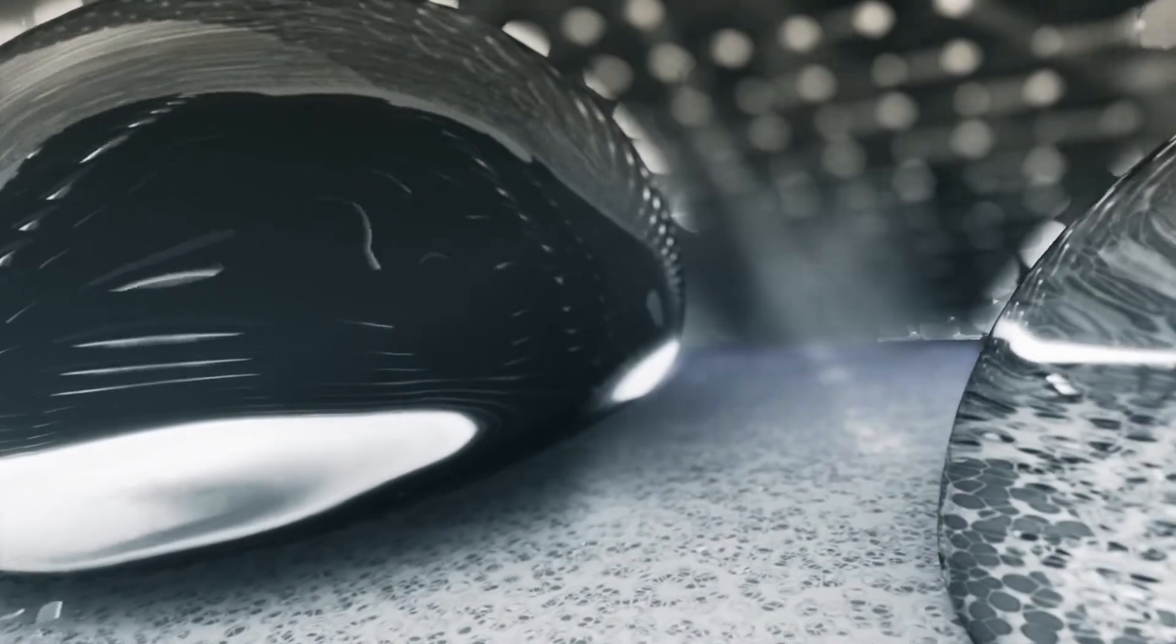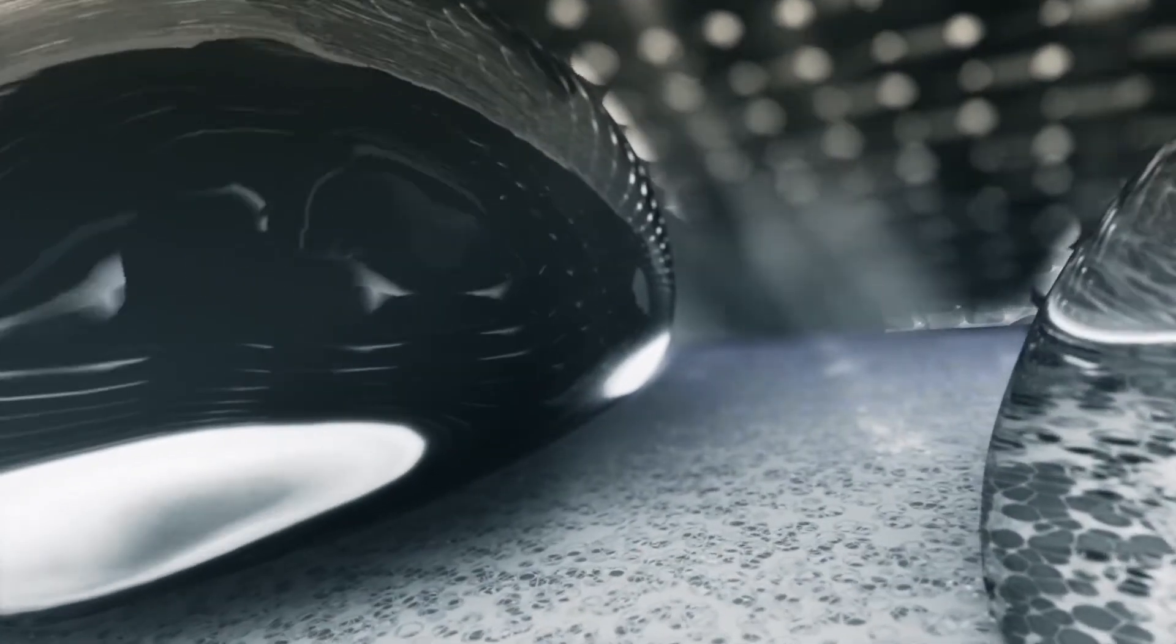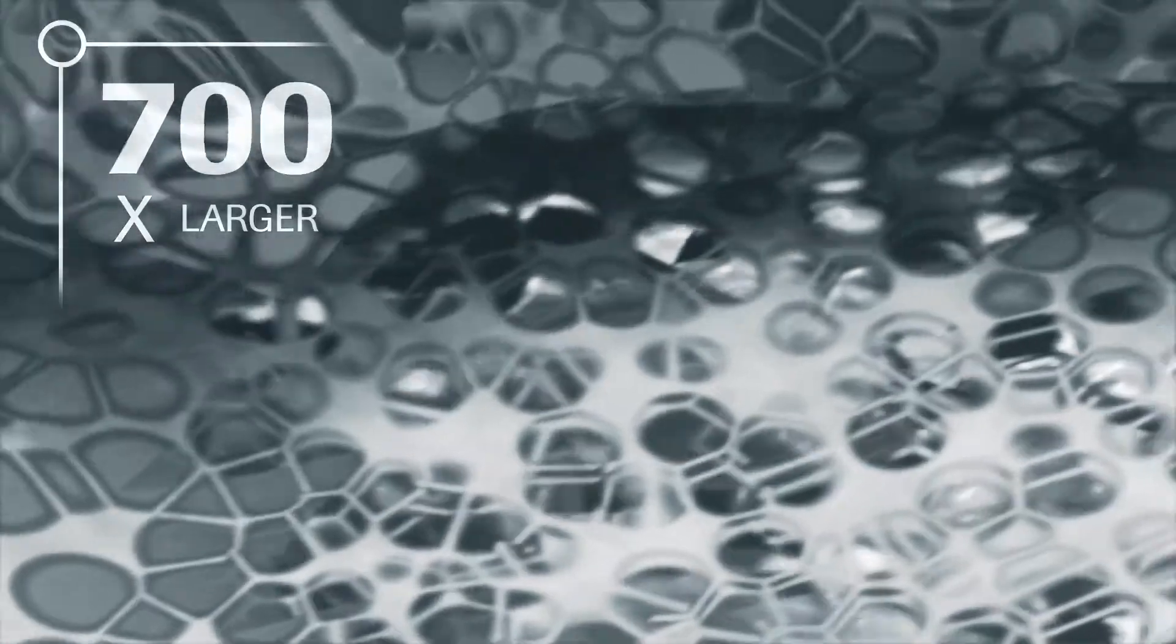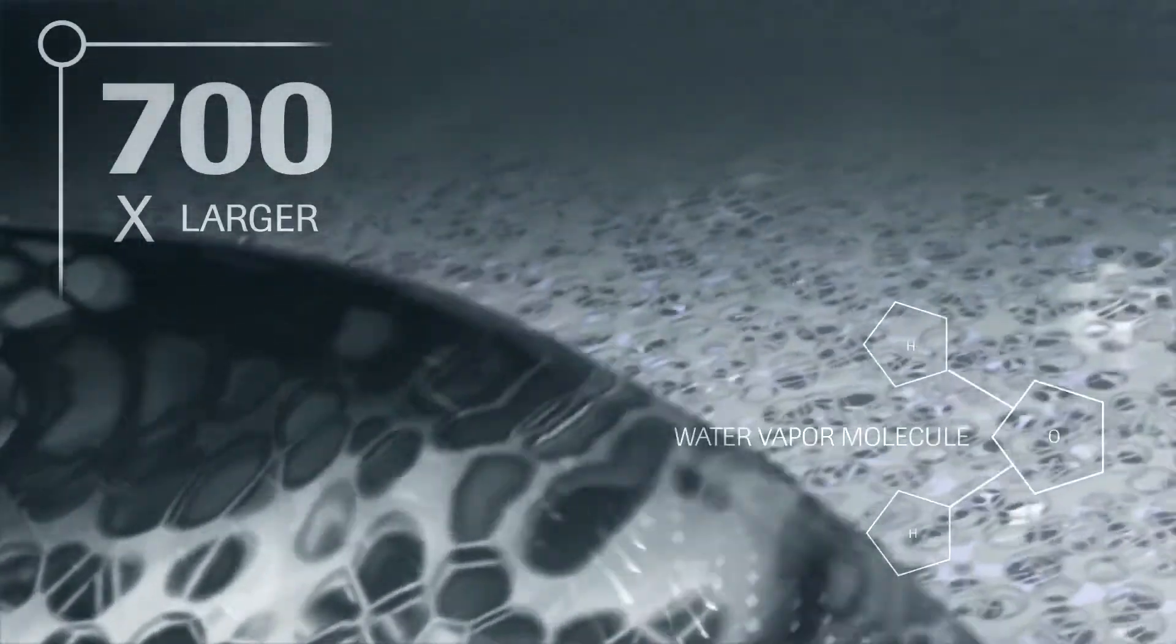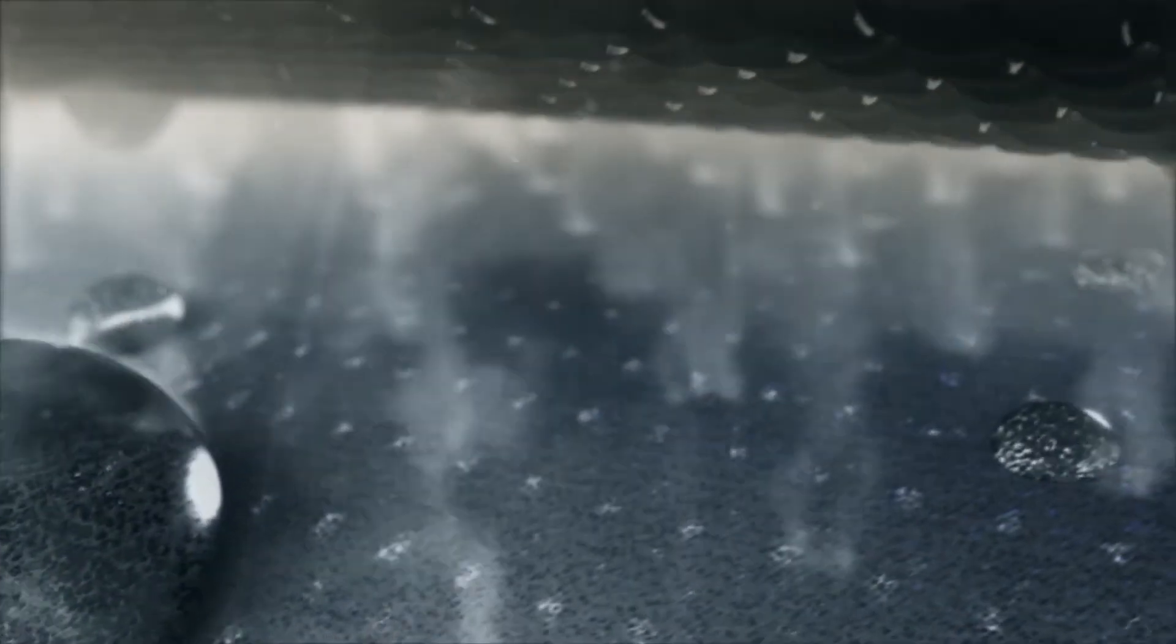While each pore of a Gore-Tex membrane is smaller than a water droplet, each pore is 700 times larger than a water vapor molecule. This is what enables Gore-Tex fabric to breathe so that sweat vapor can escape, keeping you dry from the inside.